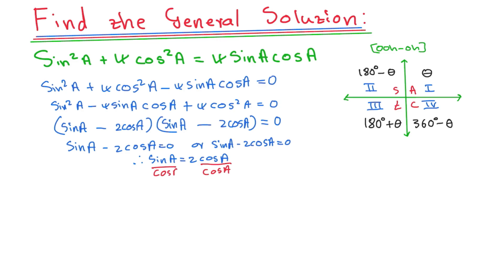I'll be left with, remember, here it's cos A. So cos and cos cancel each other. I'll be left with sin over cos is tan. So I'll have tan A is equal to 2. And then I will want my reference angle. I'll say my reference angle is what? A will be tan the inverse of 2. And when you punch it on your calculator, you're going to find that your A will be 63.43 degrees. Easy, right?